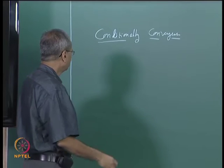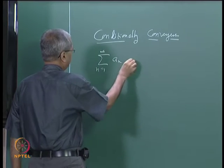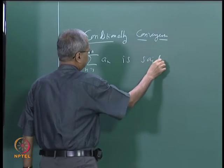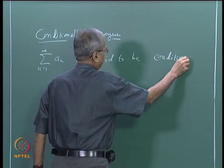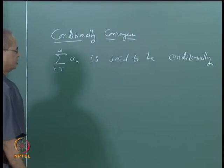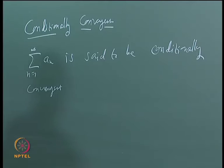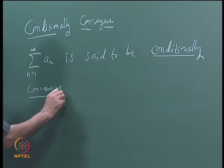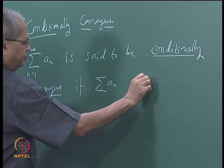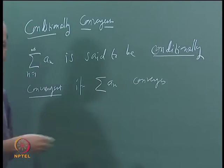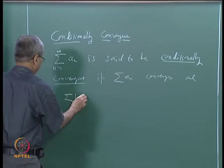To give a more formal definition: suppose we have a series sigma a_n, n going from 1 to infinity. This is said to be conditionally convergent, or we say it converges conditionally, if the series converges — that is, sigma a_n converges — but it is not absolutely convergent, meaning sigma mod a_n diverges.